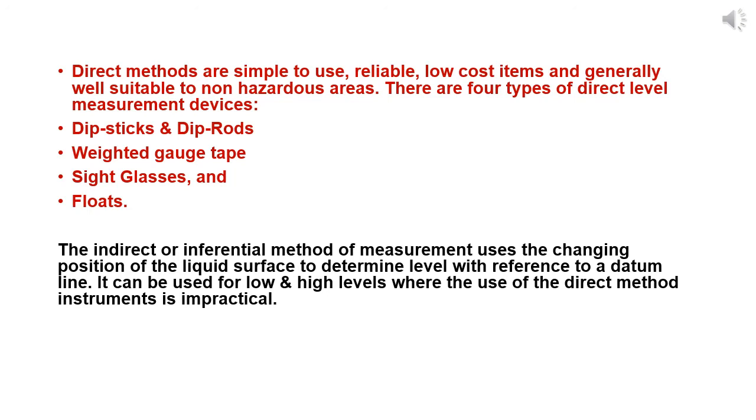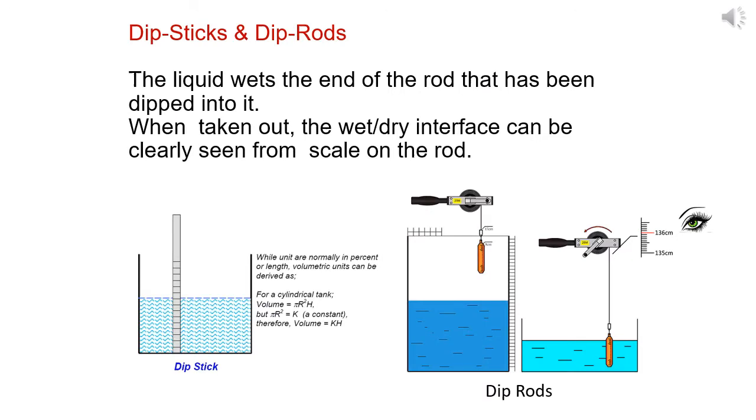Dipstick and dip rod, weighted gauge tape, sight glasses, and floats. The indirect or inferential method uses the changing position of the liquid surface to determine the level. It can be used for low and high levels where the use of direct method instruments is impractical. The dipstick method - the liquid wets the end of the rod that has been dipped into it. When taken out, the wet-dry interface can be clearly seen from the scale of the rod.